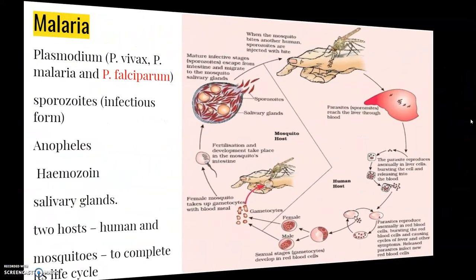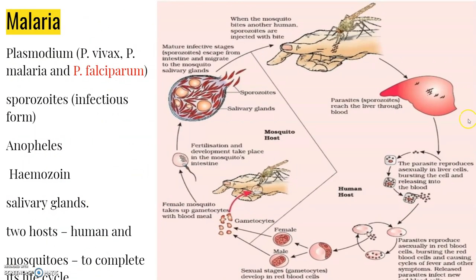Some human diseases are also caused by protozoans. Malaria is a disease that humans have been fighting for many years. Plasmodium, a tiny protozoan, is responsible for this disease. Different species such as Plasmodium vivax, Plasmodium malariae, and Plasmodium falciparum are responsible for different types of malaria. The malignant malaria caused by Plasmodium falciparum is the most serious and can be fatal.